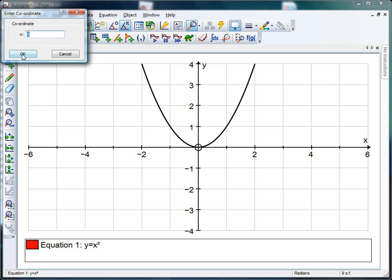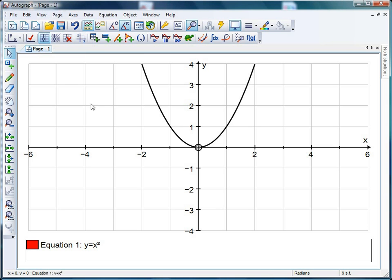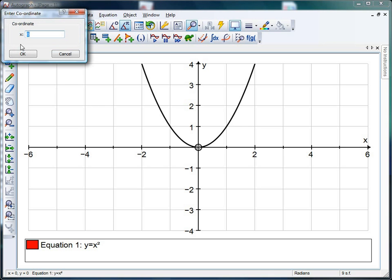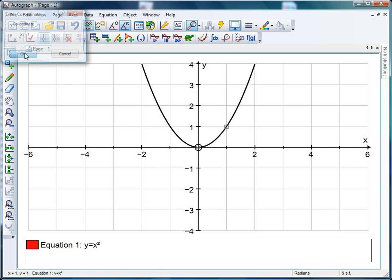You'll notice you don't get a choice between your y values because this is going to fix the x coordinate to the curve itself. So I'd like an x value of zero please, which should give me (0,0), and then I'd like an x value of one and click OK.